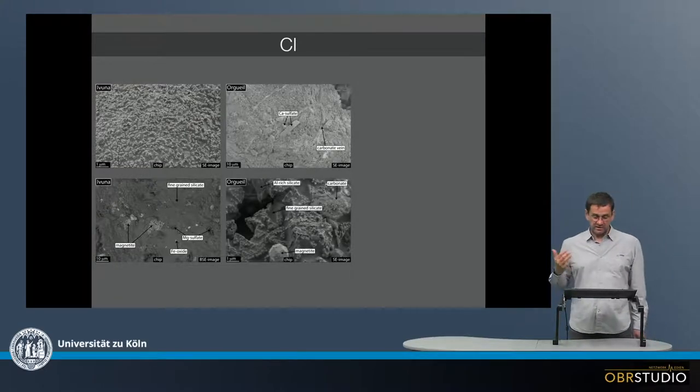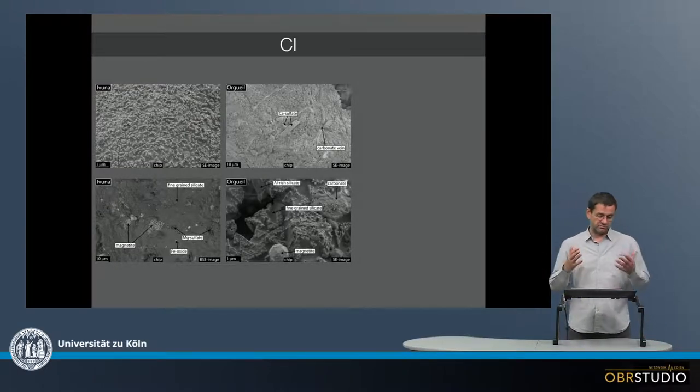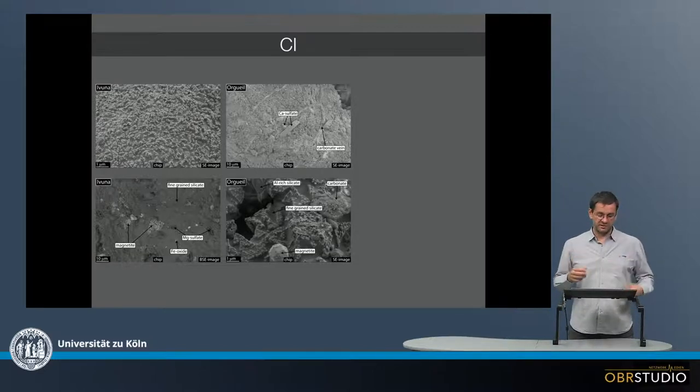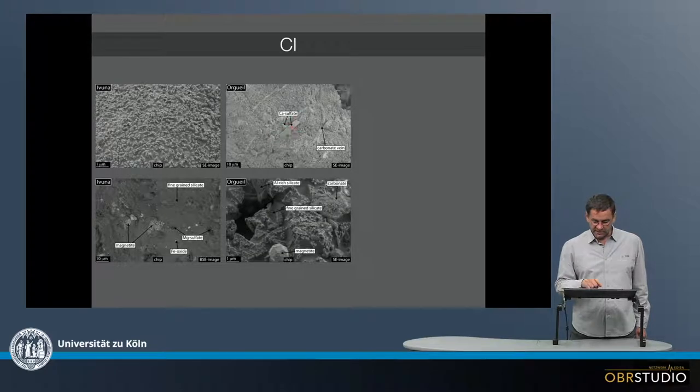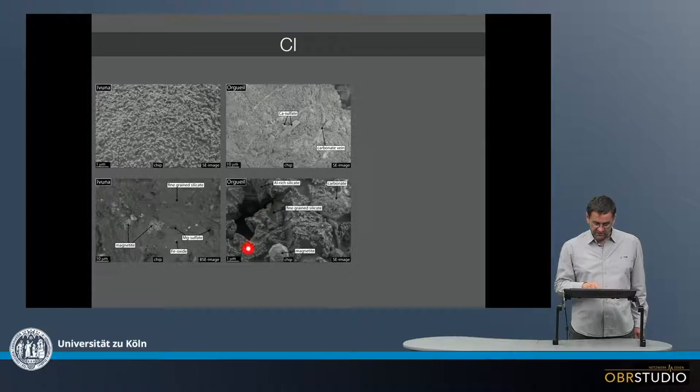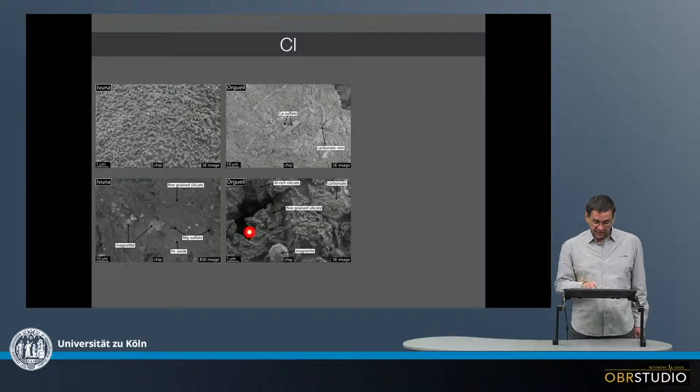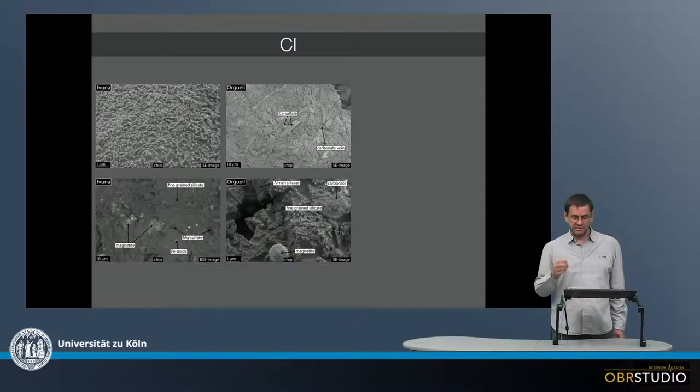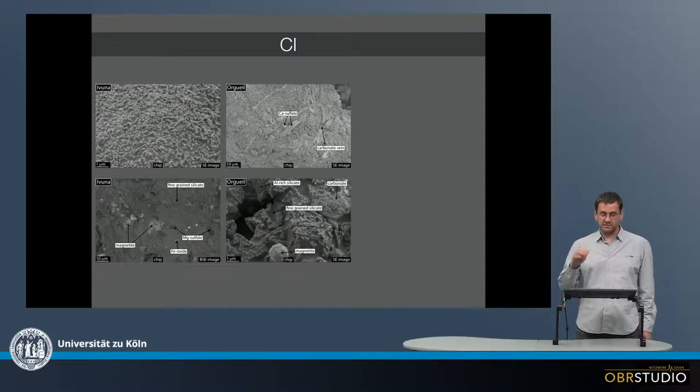So this second CI chondrite is Orgueil, which is quite famous or popular meteorite, maybe because there's quite a lot of it, but it's also altered. So there's calcium sulfate, this is likely secondary. And there's some fine-grained silicate, again this is one micron, so these are nanometer structures. And in between again something like amorphous material, and there's some magnetite crystal with quite nice edges.